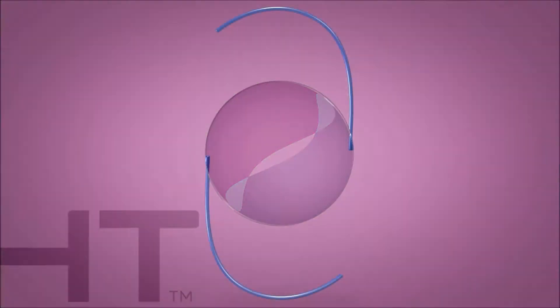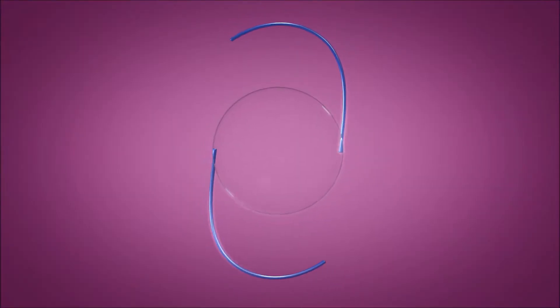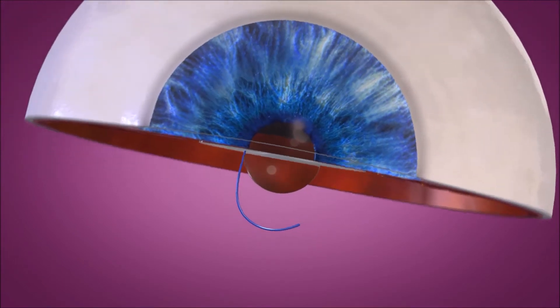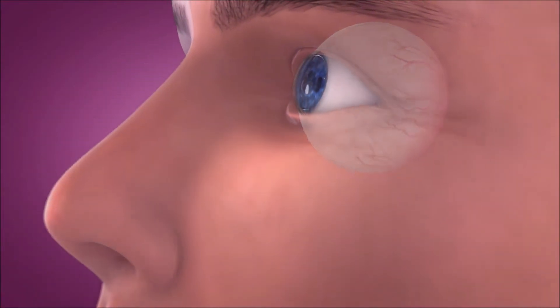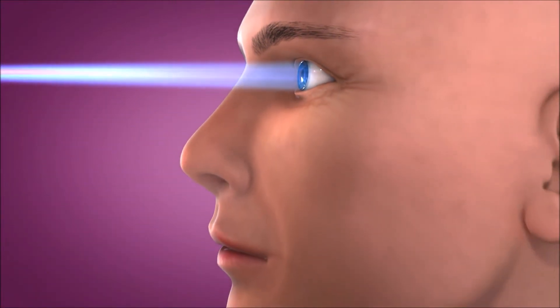RxSight's light-adjustable lens provides cataract surgeons with the ability to adjust the power of an intraocular lens after the lens has been implanted and the eye has healed with an in-office light treatment that takes approximately 90 seconds.